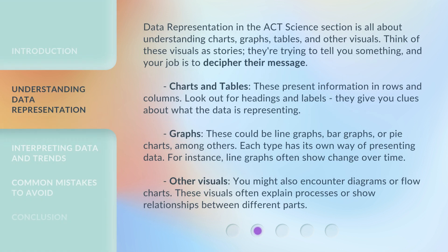Data representation in the ACT Science Section is all about understanding charts, graphs, tables, and other visuals. Think of these visuals as stories — they're trying to tell you something, and your job is to decipher their message. Charts and tables present information in rows and columns. Look out for headings and labels; they give you clues about what the data is representing.